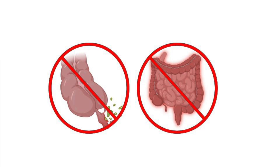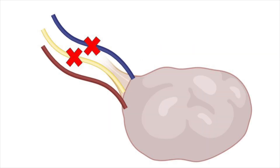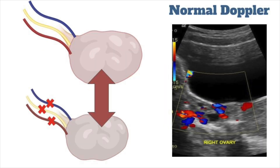With ovarian torsion, lymphatic and venous obstruction occur first, followed later by arterial obstruction. Patients with intermittent torsion may have completely normal venous and arterial flow on ultrasound. So while many think Doppler flow can be used to exclude ovarian torsion, don't rely on it.